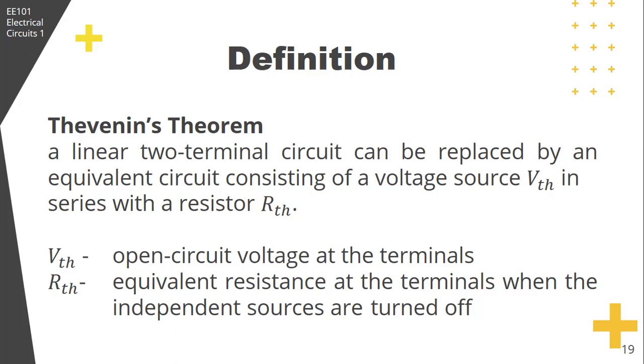Thevenin's theorem provides a technique by which the fixed part of the circuit is replaced by an equivalent circuit. It states that a linear two-terminal circuit can be replaced by an equivalent circuit consisting of a voltage source VTH in series with a resistor RTH. VTH is the open circuit voltage at the terminals, and RTH is the equivalent resistance at the terminals when the independent sources are turned off.